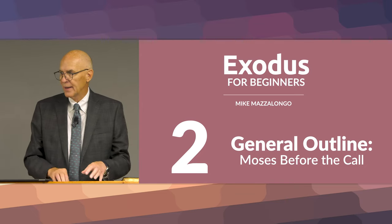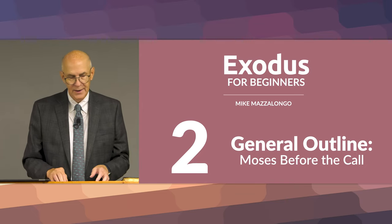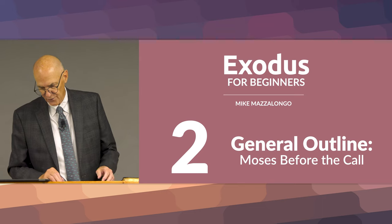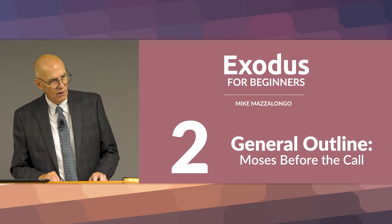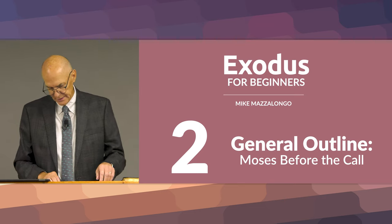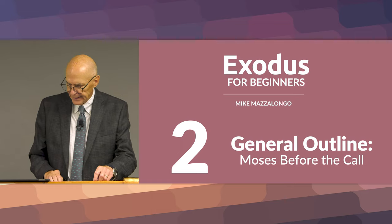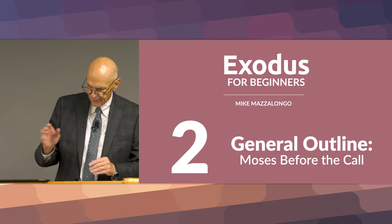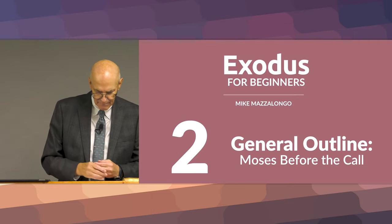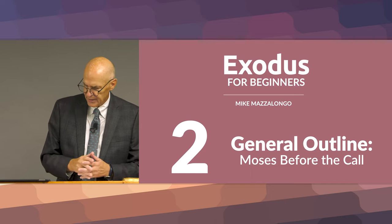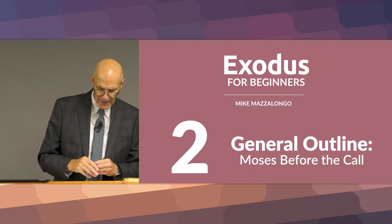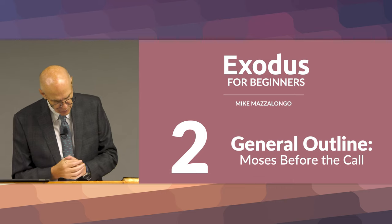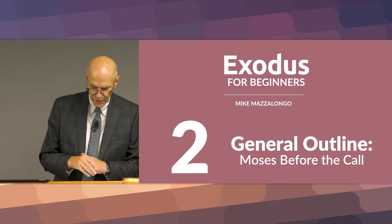Here we are at the class for the book of Exodus, Exodus for Beginners. We are on lesson number two, and the title of this lesson is The General Outline. We're at that part, Moses before the call, and we're going to cover Exodus chapter one, verse one through chapter three, verse nine.